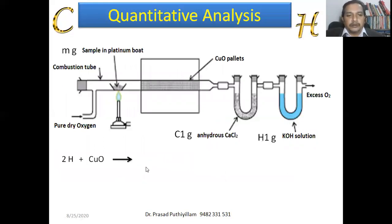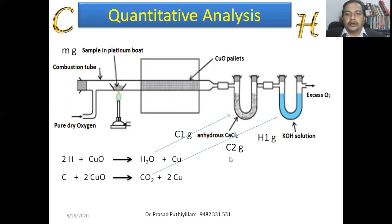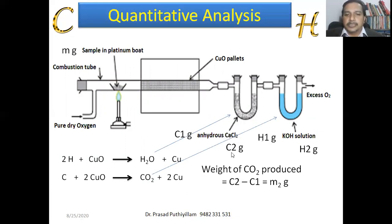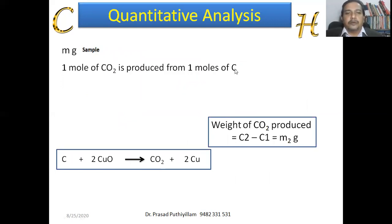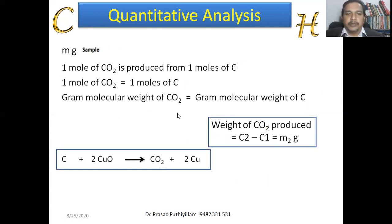Now for the case of carbon dioxide and carbon: the weight of the KOH U-tube increased to C₂ grams, so the weight of carbon dioxide produced is C₂ − C₁ = M₂ grams. From the reaction, one mole of carbon dioxide contains one mole of carbon. The gram molecular weight of CO₂ is 44 grams (16 + 16 + 12 = 44), and the gram molecular weight of carbon is 12.